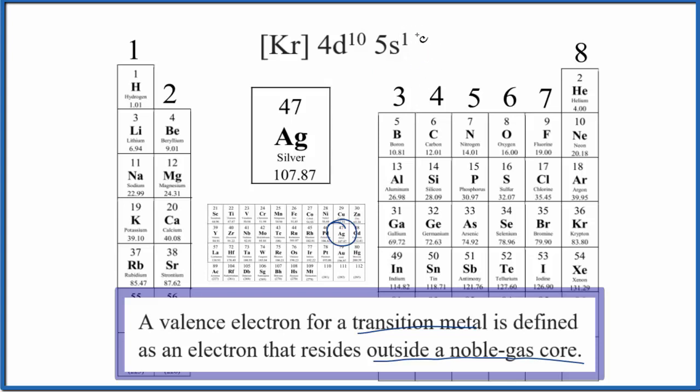But if you're thinking about chemical bonding, it's probably better to say that silver only has one valence electron because it forms one plus ions. It loses this one electron and has a one plus charge.